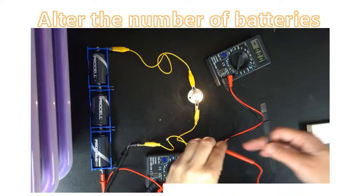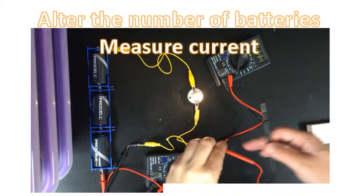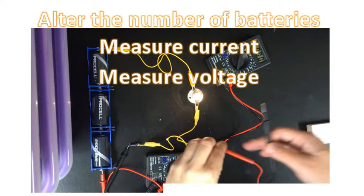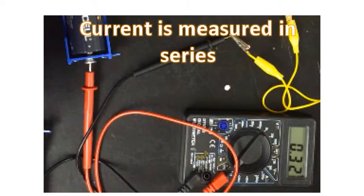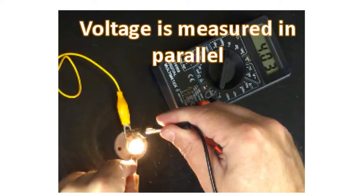To do this today, we'll have to alter the number of batteries. We'll have to measure the current and we'll have to measure the voltage. Current is measured in series and voltage is measured in parallel. Please make note of that.